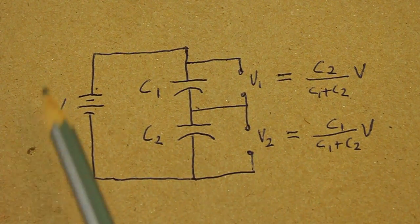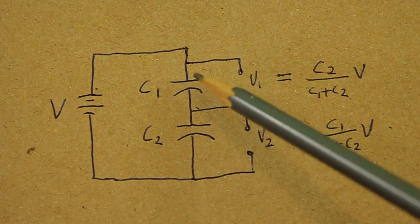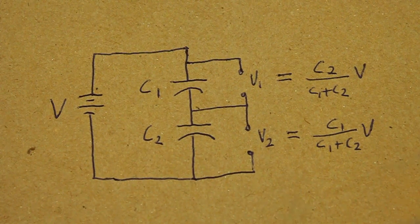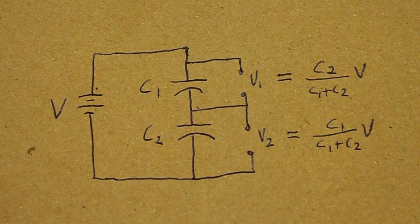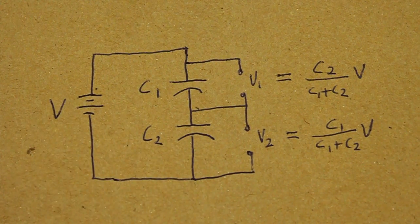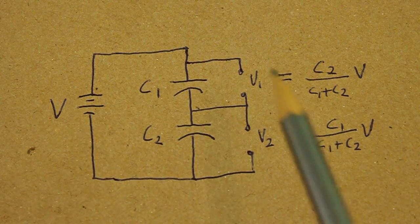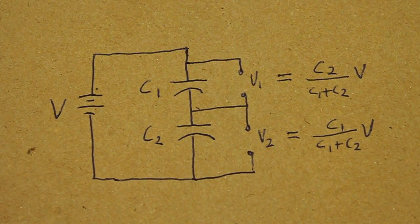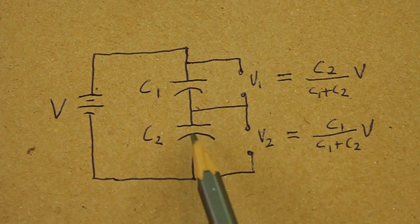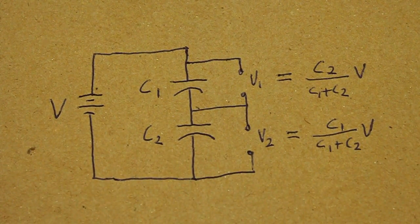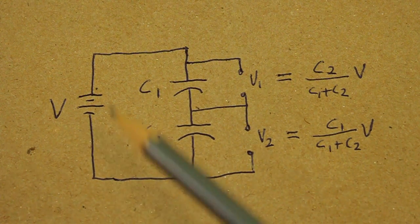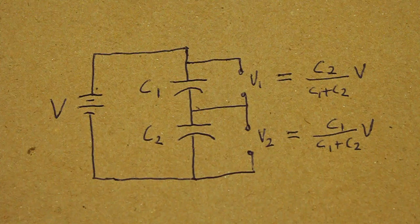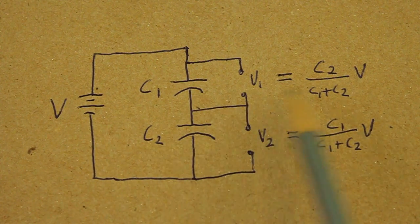When we apply a voltage to two capacitors in series, the voltage divides between the two capacitors. For example, if your input voltage is 10 volts, maybe 8 volts will go to capacitor 1 and the remaining 2 volts will go to capacitor 2. Of course, the precise division of the voltage depends on the capacitances and the formulas are given here.